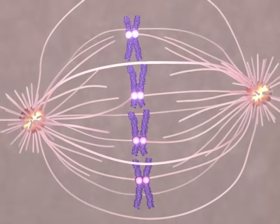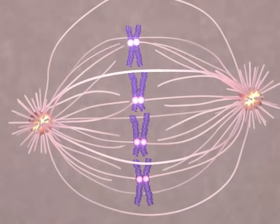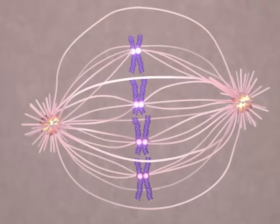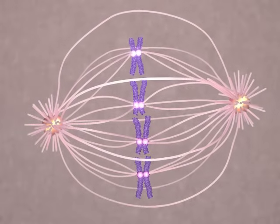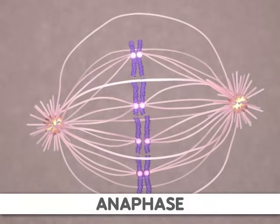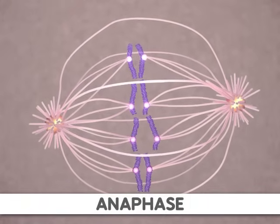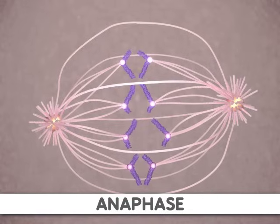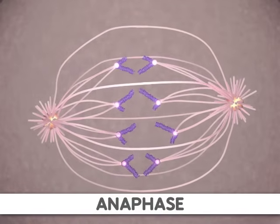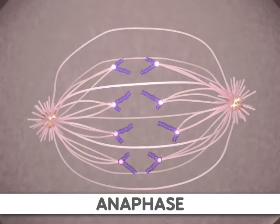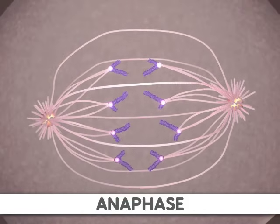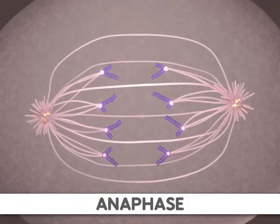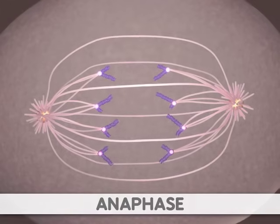This occurs during anaphase through a shortening of the microtubules attached to the kinetochores. Additionally, the poles of the cell move farther apart, causing increased separation of sister chromatids. At the end of anaphase, the sister chromatids have moved to the two ends of the cell.